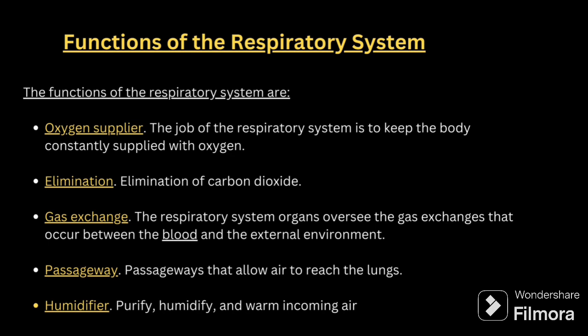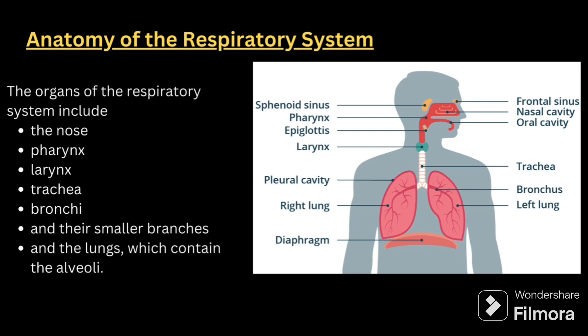These are the important functions of the respiratory system. Whenever we are talking about the system, we have to start with the function so that it will be quite interesting when you carry it along. Next comes the anatomy of the respiratory system. The organs include the nose, pharynx, larynx, trachea, bronchi and small branches, and the lungs which contain the alveoli. I have given an image so you can relate those parts. You should have a proper diagram in your mind so you can relate points to it.